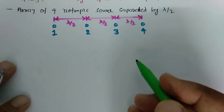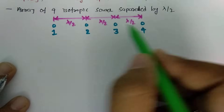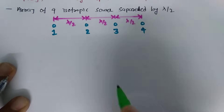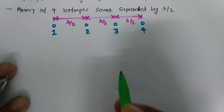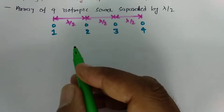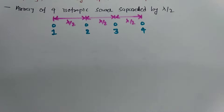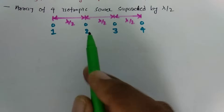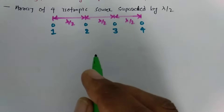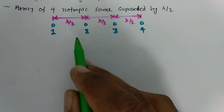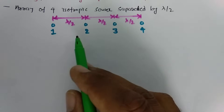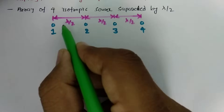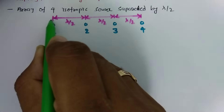Let us take this example where we have four isotropic sources separated by a distance of lambda by 2. For this case we are going to find the radiation pattern. We can clearly see there are four point sources: 1, 2, 3, and 4. To calculate the resultant pattern, we consider a group of elements and calculate individual patterns. In this example we consider group of points 1 and 2.